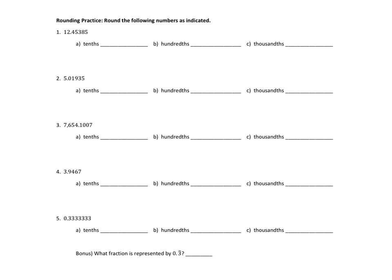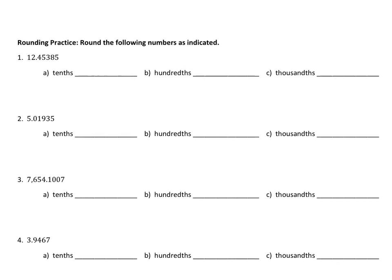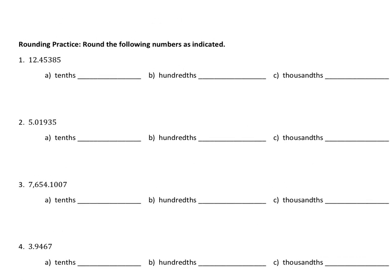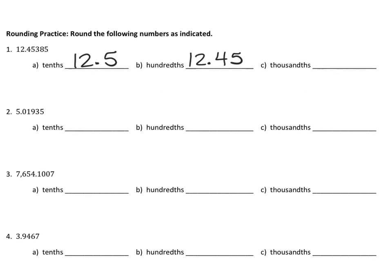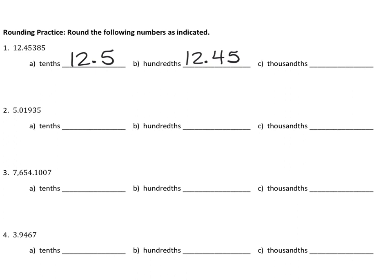If we round the first number to the tenths spot, that means keeping one decimal — we would raise the score to 12.5. If rounding to the hundredths, we're keeping two decimals and we let it rest. If rounding to the thousandths, we keep three decimals — this is 12.454.